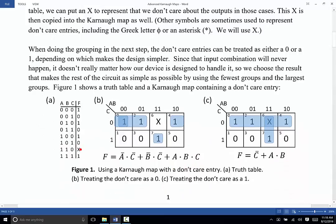Here we have a don't care entry in the next to the last cell, cell number six. And you can see here that I've drawn the key map twice. Once I've drawn it in figure B and once in figure C. In figure B, we're treating the X as though it is a zero. And in figure C, we're treating the X as though it's a one.